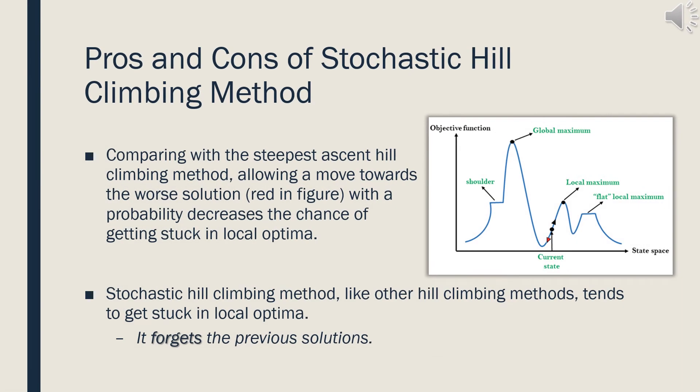Comparing the two types of hill climbing methods, accepting a worse solution with a probability decreases the chance of getting stuck in local optima. Stochastic hill climbing allows movement in the direction shown in the figure. However, like other hill climbing methods, this method also tends to get stuck in local optima because it forgets the previous solutions.